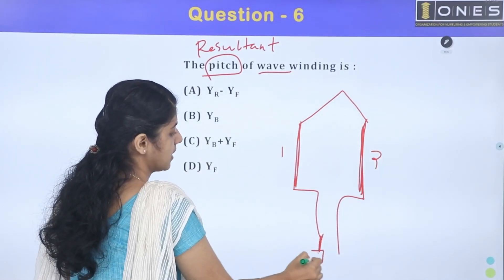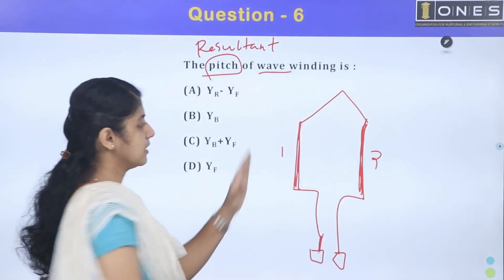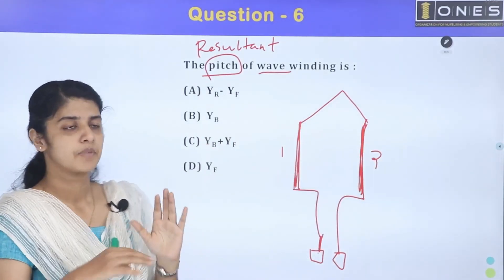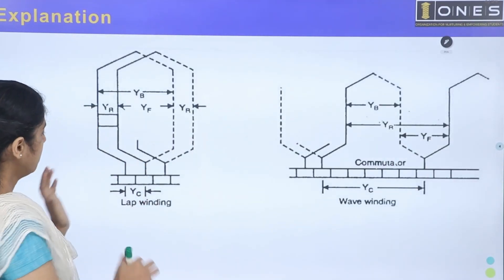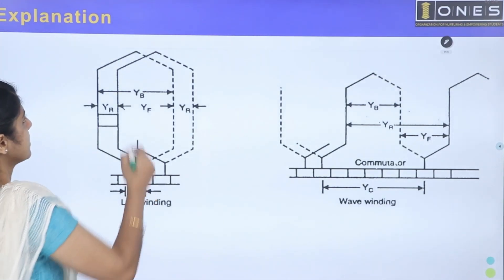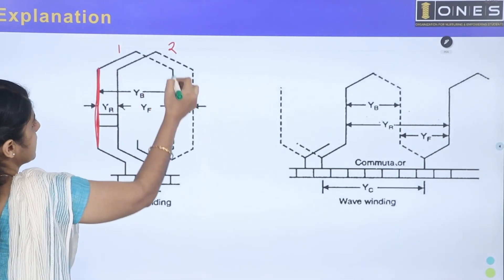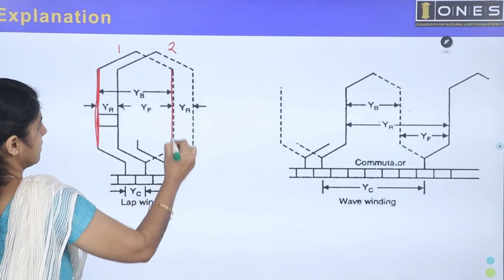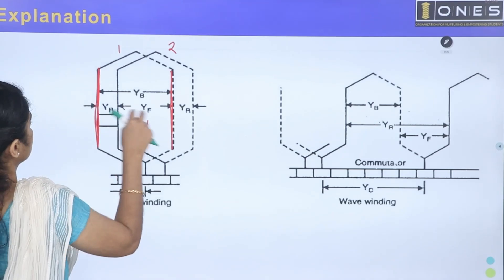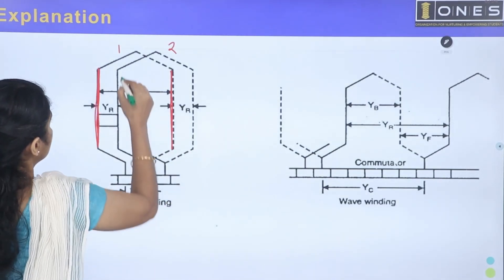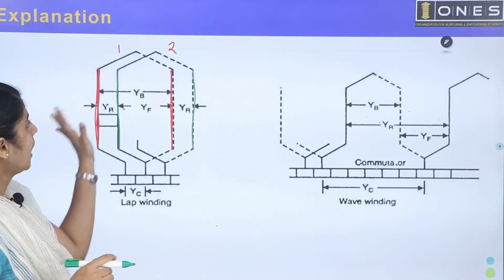Wave winding has a starting conductor and an end conductor. For a coil, you have two conductors — first conductor and second conductor, front conductor and back conductor. We compare wave winding with lap winding. In lap winding, we have coil 1 and coil 2: coil 1 has its first conductor and coil 2 has its second conductor.